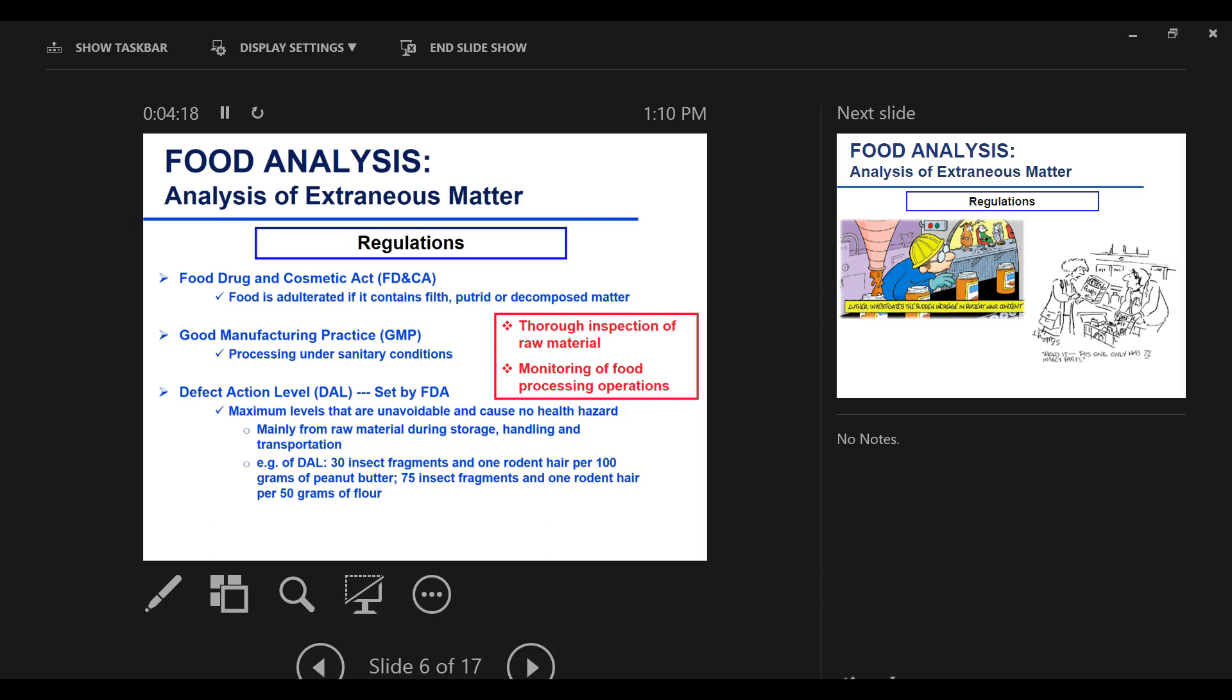For example, we are allowed to consume 30 insect fragments per 100 grams of peanut butter. So look at your peanut butter jar and see how many grams of peanut butter. You can estimate how much insects you are consuming along with the peanut butter jar. 75 insect fragments per 50 grams of flour. So your piece of bread is loaded with insects. Think about them as extra protein in your food.